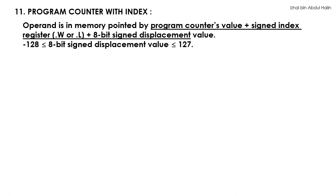Program counter with index addressing mode. For this addressing mode, the operand is located in memory. An instruction using this addressing mode retrieves the operand by pointing to its address. The address is calculated by adding the program counter's value, a signed index register's value, and an 8-bit signed displacement value whose range is in between negative 128 and 127. You may use any of the address registers or data registers as the signed index register. The size of this register can only be word or long word in length. The operand size supported can be either byte, word, or long word.